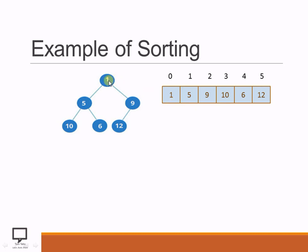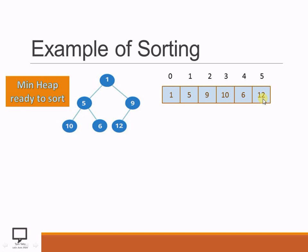The relationship between array elements — parent nodes and child nodes — has already been explained in previous videos. For reference, there is a shortcut link provided. Now let's start with the sorting. The first step is to swap the root node and the last value of the array — that is, swapping 1 and 12. This is the main heap which is ready to sort. We replace the root with the last number and remove the smallest one, which after replacement takes the last position.